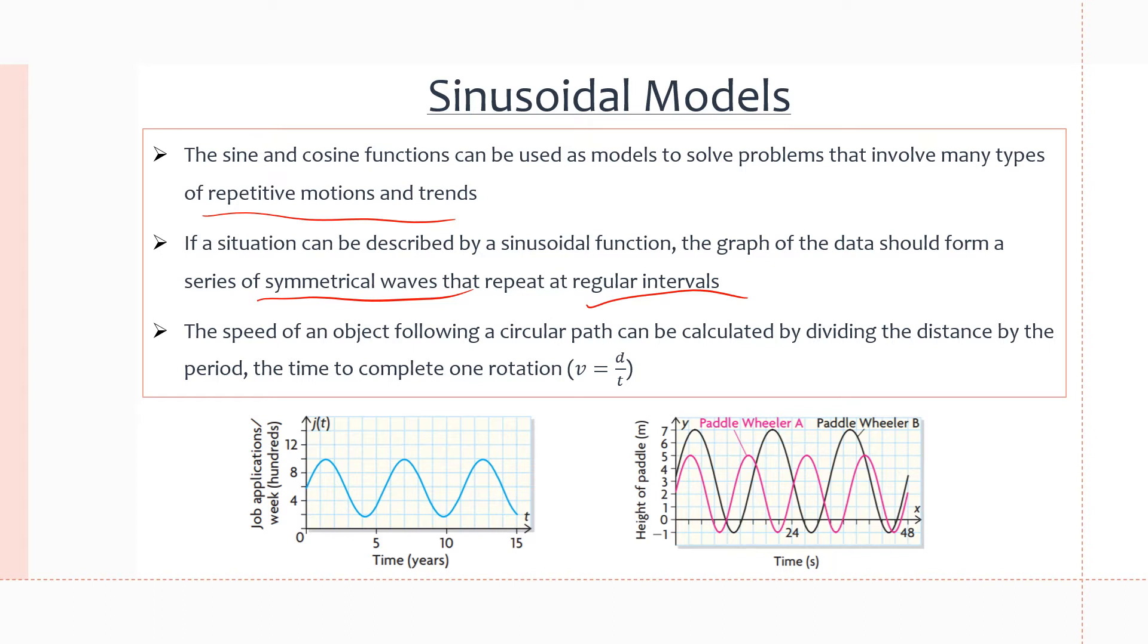If we wanted to calculate the speed of an object while in sinusoidal motion, we can divide the distance by the period, the time to complete one rotation. This can be represented by speed equals distance over time by this equation right here.